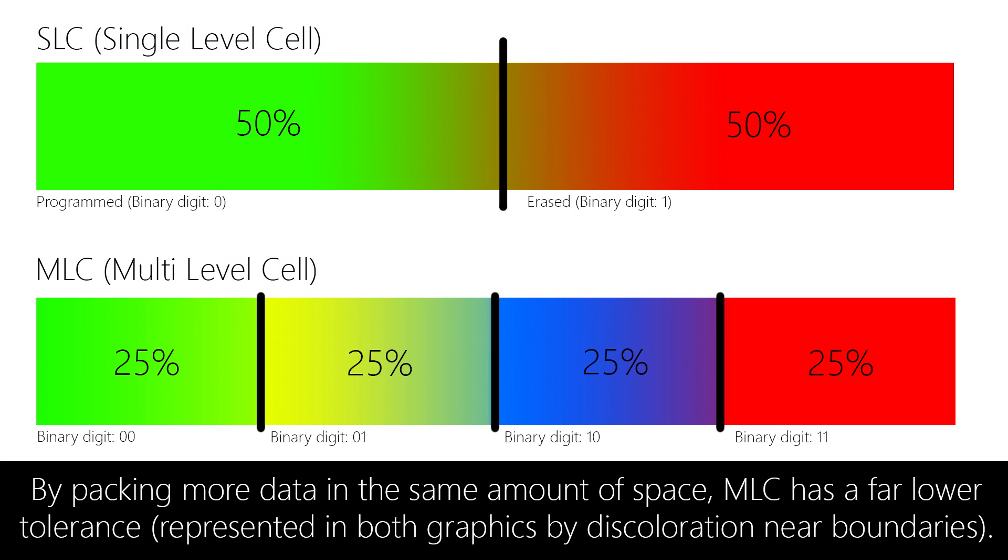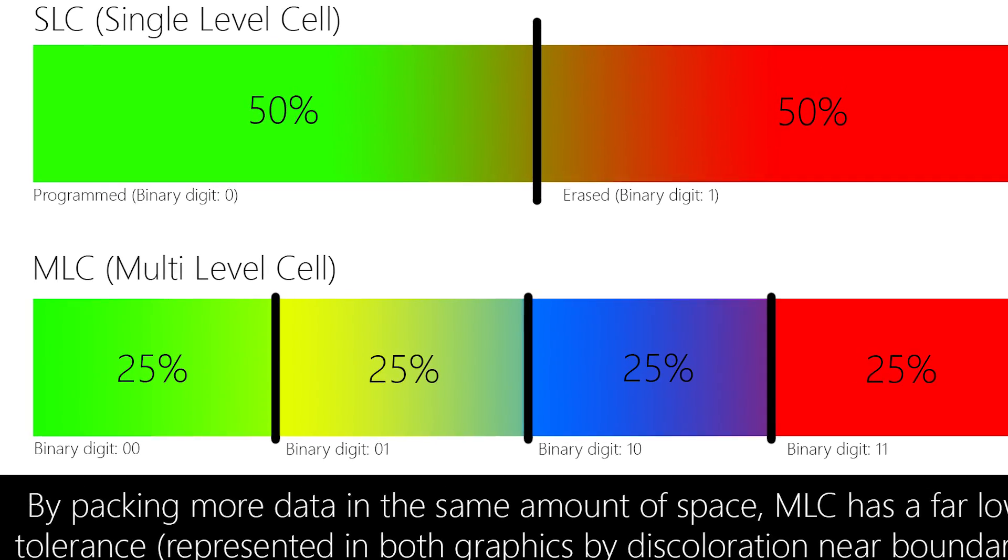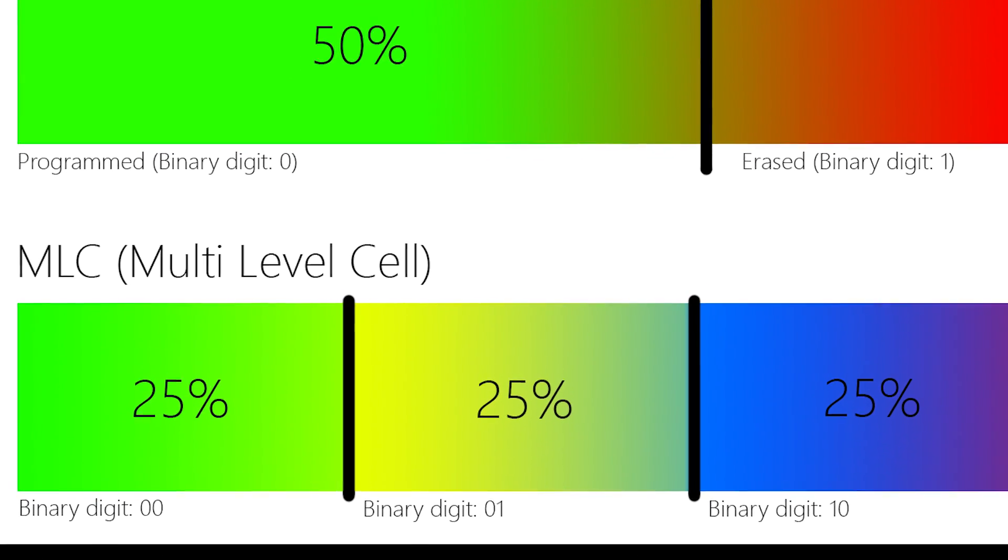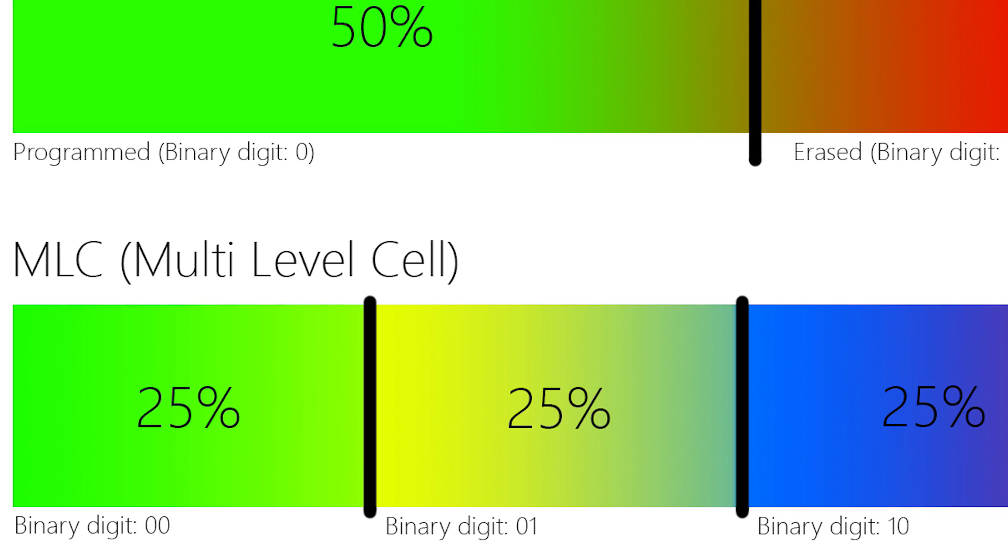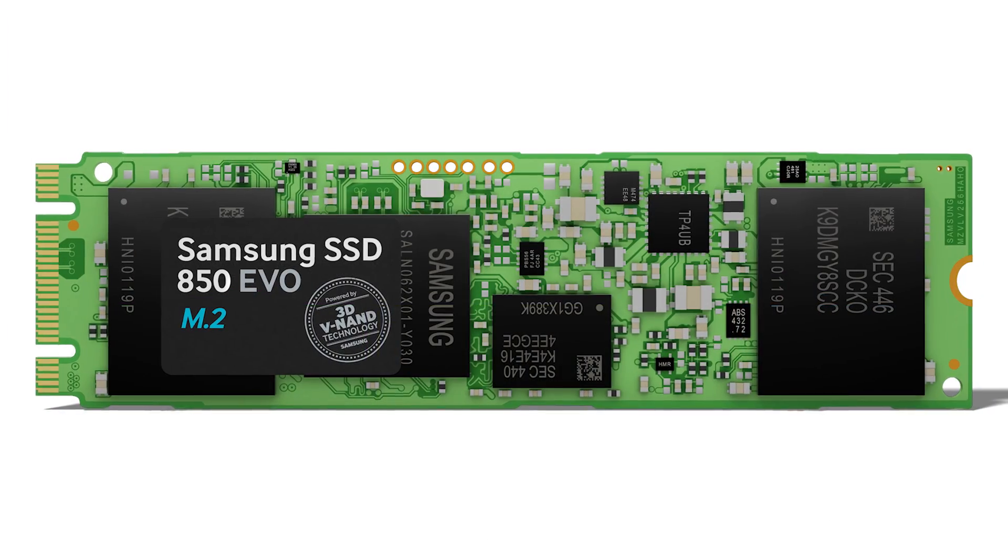But with a multi-level cell system, since the maximum voltage is around about the same, you can actually pack twice the amount of information in the same amount of space. But unfortunately, all this extra capacity doesn't come without a price.